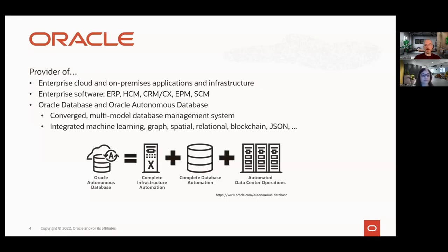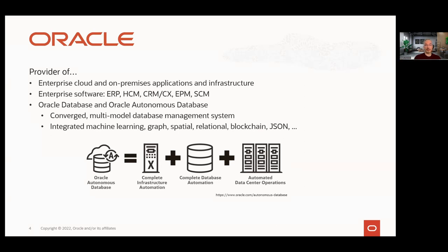For those of you who may not be familiar with Oracle as a company, a few brief comments. Oracle is a provider of enterprise cloud and on-premises applications and infrastructure, as well as enterprise software. You probably know us best from our flagship Oracle Database, which supports what we call a converged database management system that integrates technologies like machine learning, graph, and spatial within the same database. On Oracle Cloud Infrastructure, we introduced Autonomous Database, which provides automation of infrastructure, as well as database and other data center operations, taking care of database administration so you don't have to spend time and resources tuning your database, applying patches, or updating software.